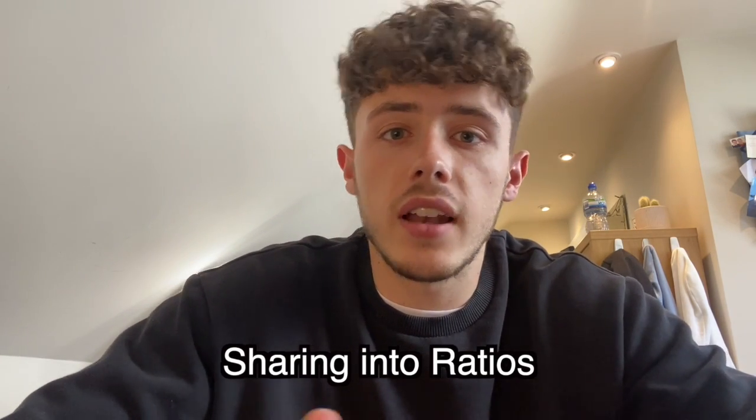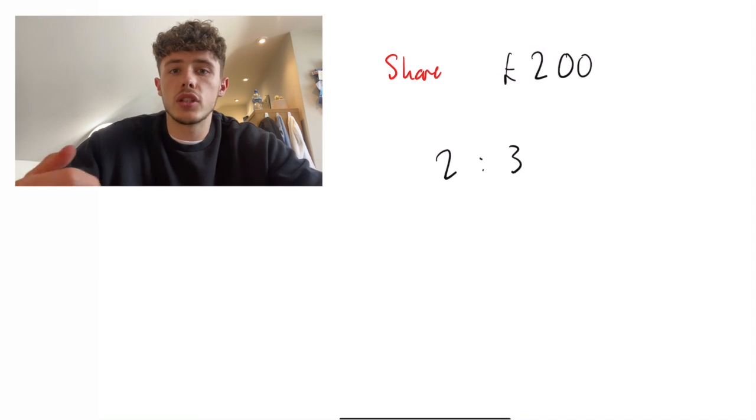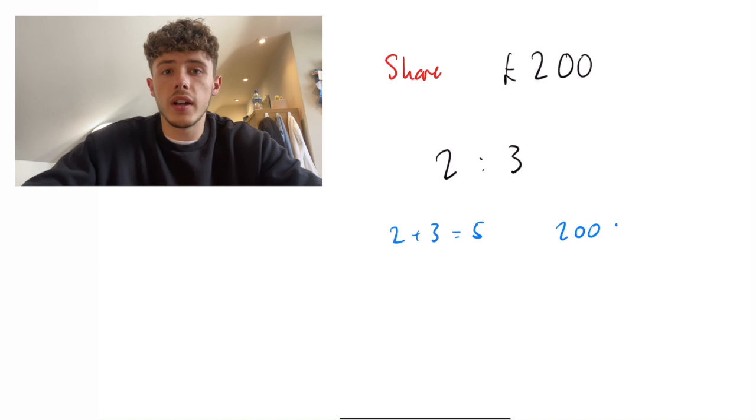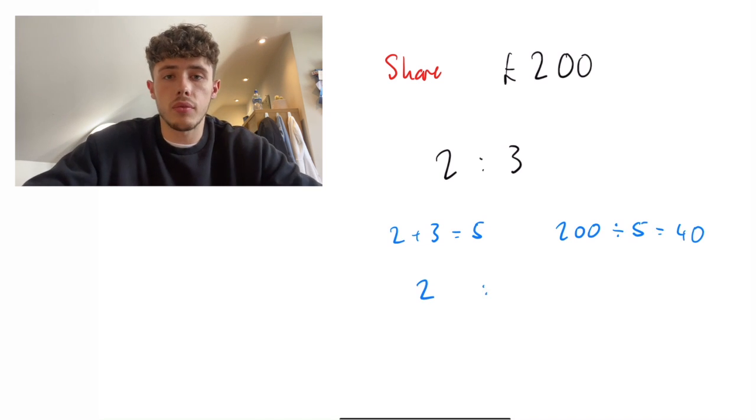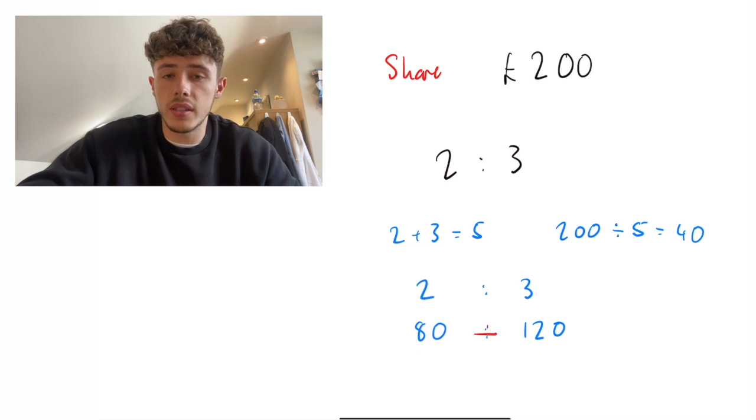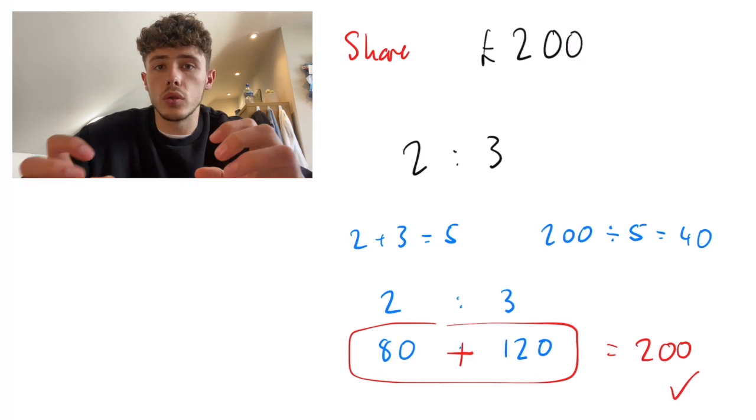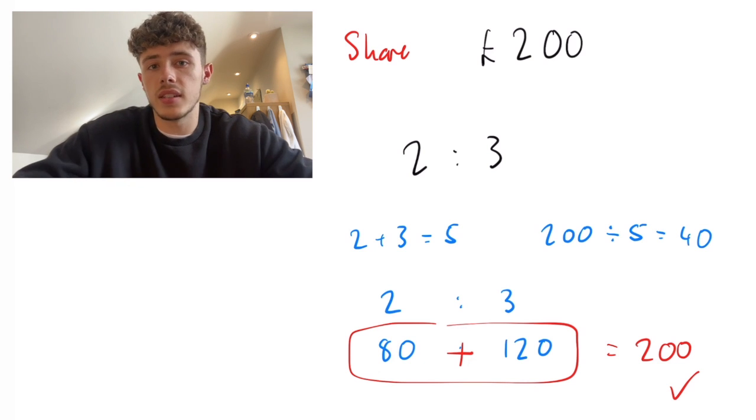Our fourth example of where we can apply this is sharing values into a ratio. Now, a ratio question would typically consist of share £200 into the ratio 2 to 3. If we do this, we would add up the ratio 2 and 3 to get 5, divide the 200 by the 5, which would get us 40, and then times the 2 and the 3 by the 40 that we just worked out. Now, 2 times 40 would be 80, and 3 times 40 would be 120. You can then go back and just double check that do those two values add up to what they should in the original. And as you can see, 80 add 120 does in fact equal 200.